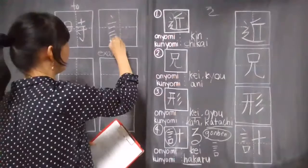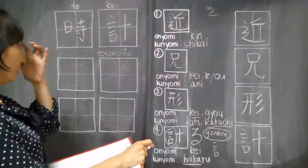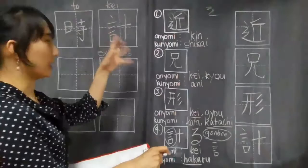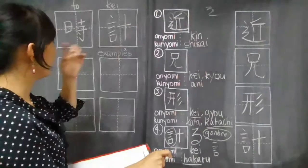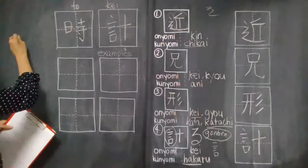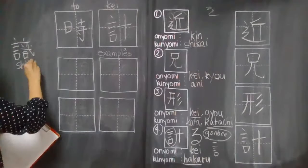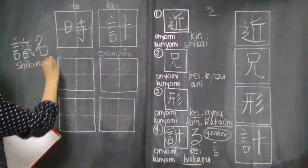The examples are tokei. Guys, tokei means watch or clock. To, the to is the jikan, jikan no kanji, jikan means time. So when you partner this time with kei, it means clock or watch.